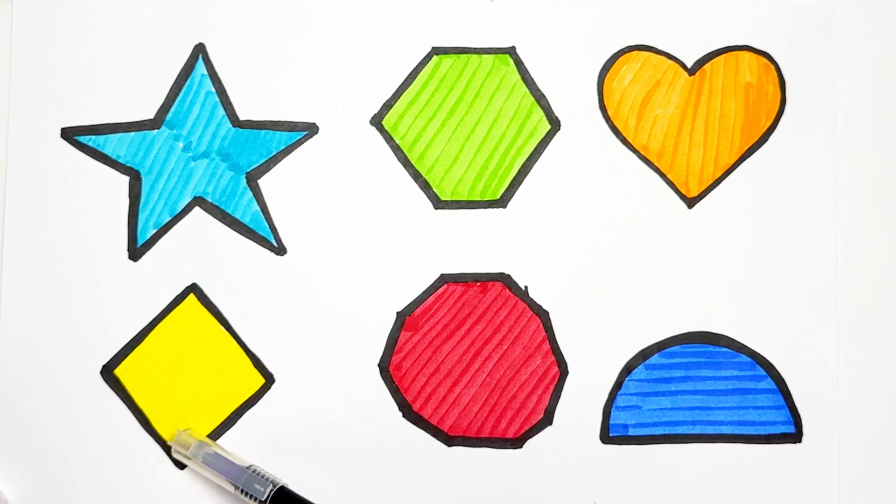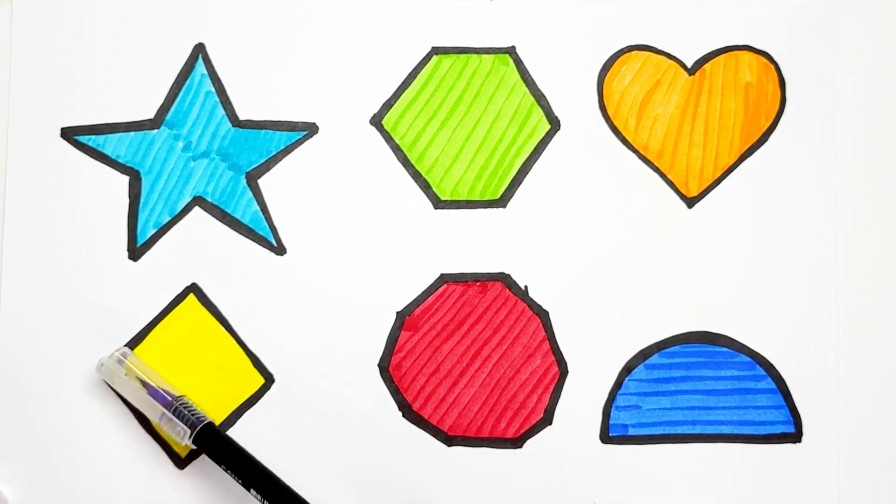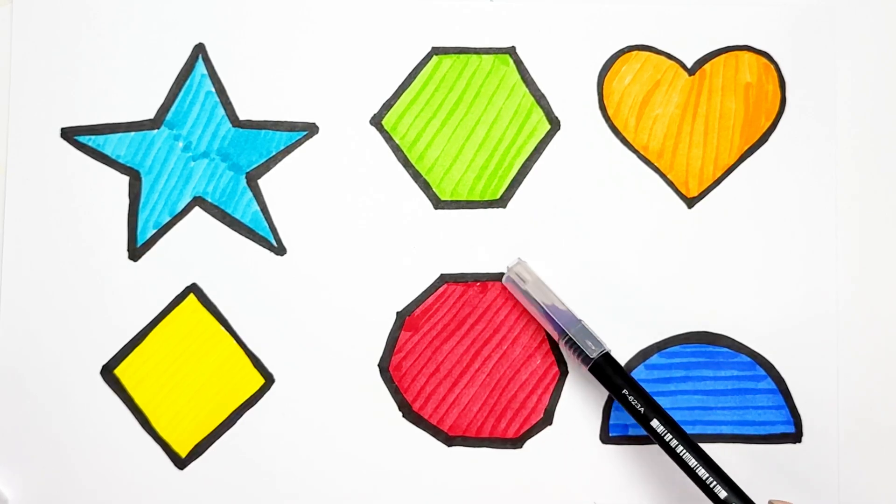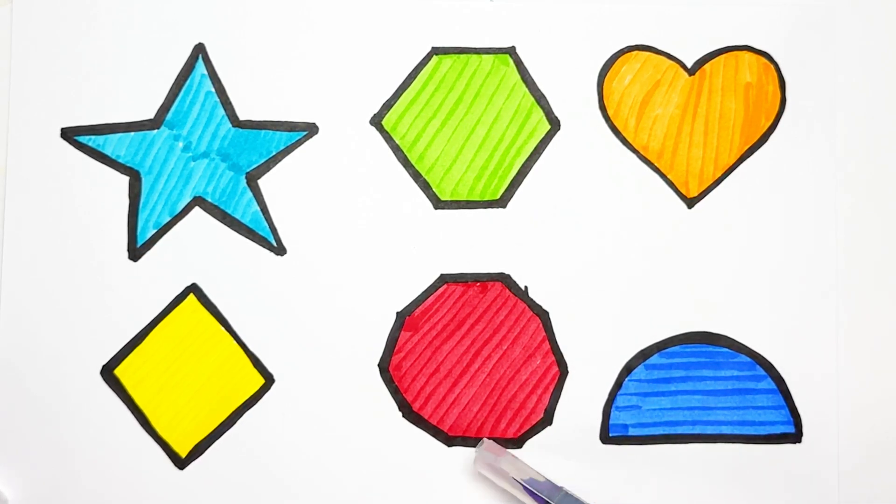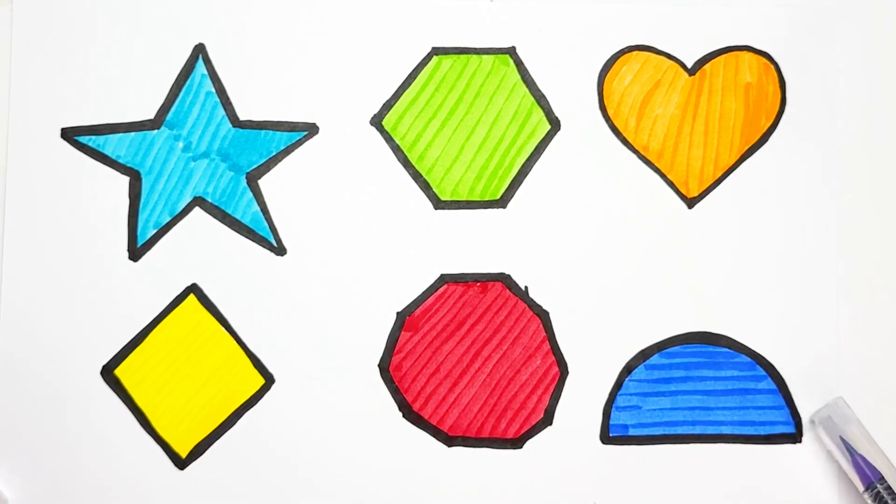Rhombus. Rhombus is like square but extended on one angle. Four angles. One, two, three, four. Decagon has 10 angles. One, two, three, four, five, six, seven, eight, nine, ten. And semicircle. It's like circle but divided into parts.